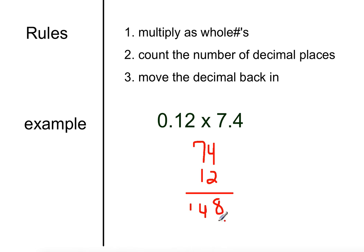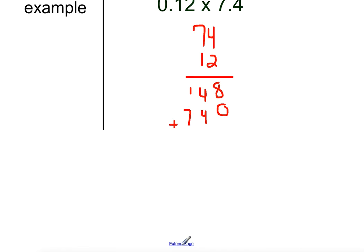I have to put a 0 to hold my place value. 1 times 4 is 4. 1 times 7 is 7. And then I need to add. So now I would add and get 8, 8, and 8.